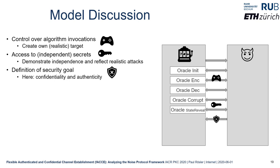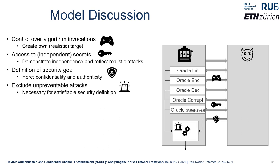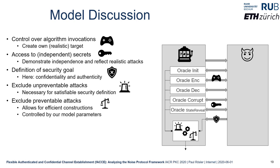To derive a security statement, one defines a security goal — an event that should not trigger during the adversary's execution with the defined oracles. In our setting, we consider confidentiality and authenticity: the adversary should not obtain information about transmitted payload and should not be able to manipulate channel traffic. However, these oracles give the adversary so much power that some attacks become unpreventable, so such attacks must be declared non-successful.